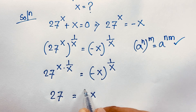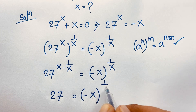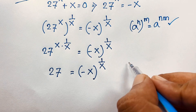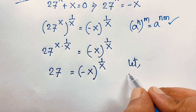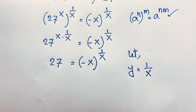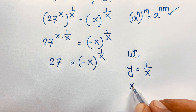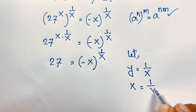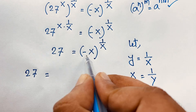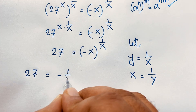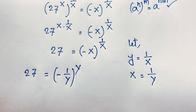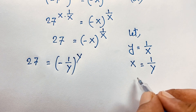On the right side we have negative x to the power 1 over x. Now I need to simplify this expression. Let y equal 1 over x, so x equals 1 over y. Substituting, we have 27 equals negative x, where x is 1 over y, bracketed to the power 1 over x, which is y.